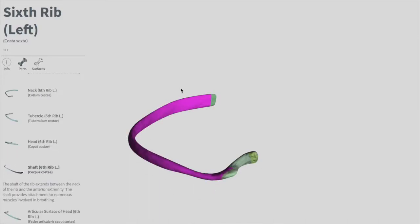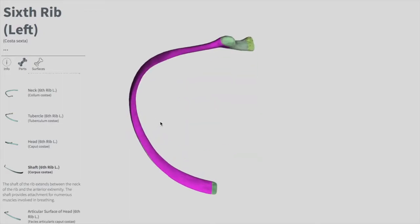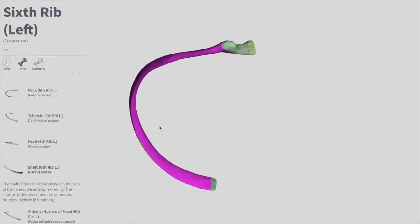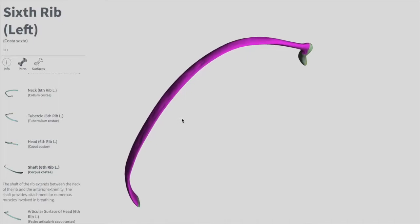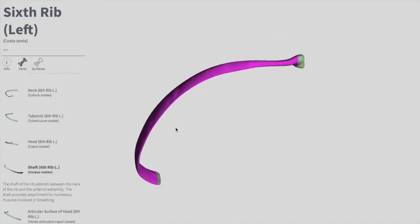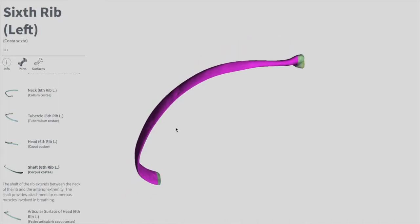Beyond the tubercle, the rest of the rib is called the shaft. The shaft is thin, long, flattened, and twisted on its long axis. On the inferior border of the shaft we have the costal groove — it's hard to see directly on this model but has already been explained in the earlier diagram.